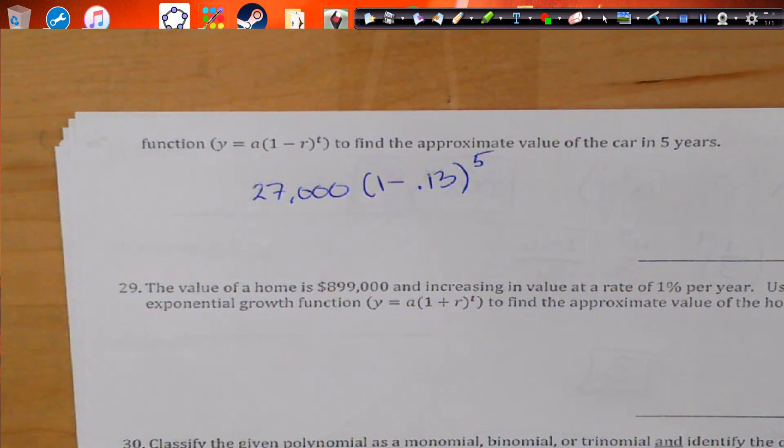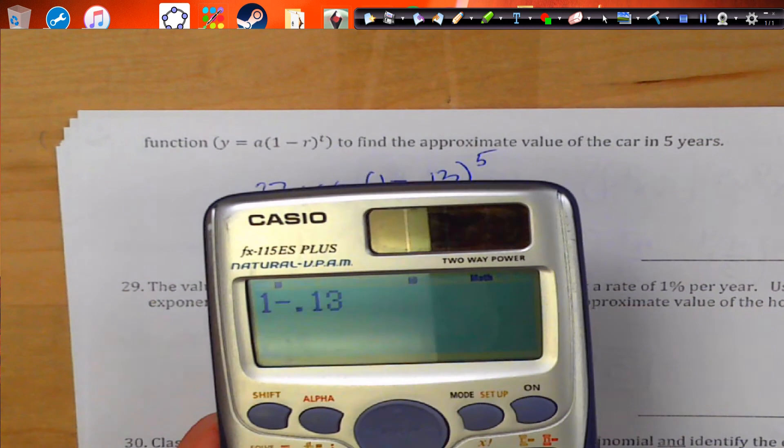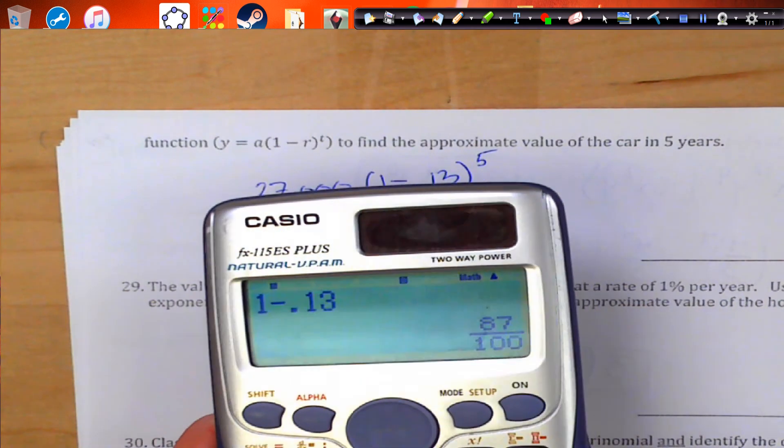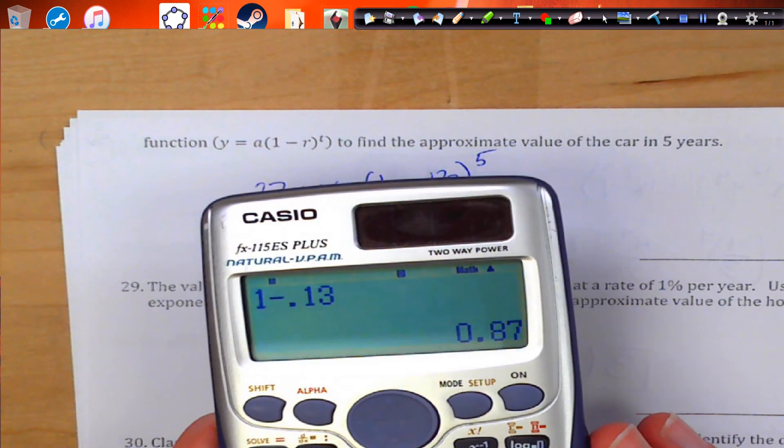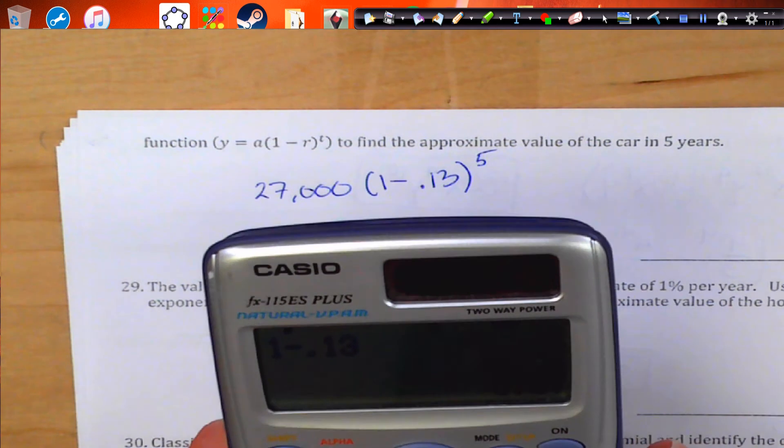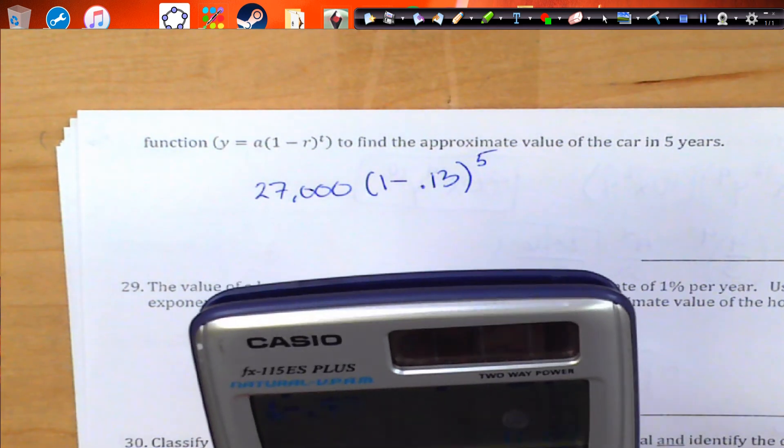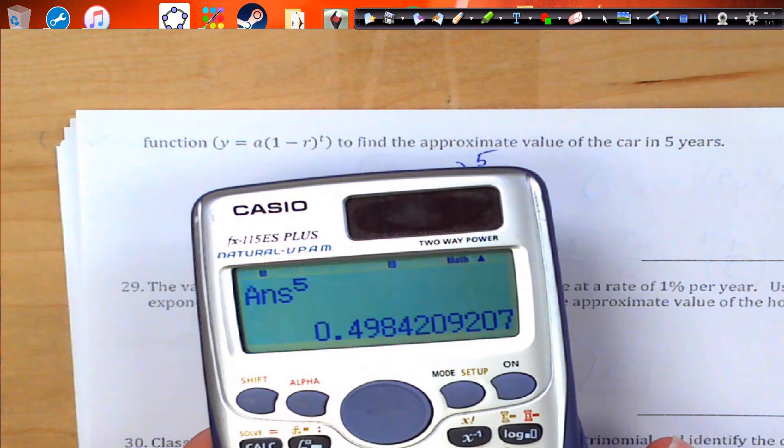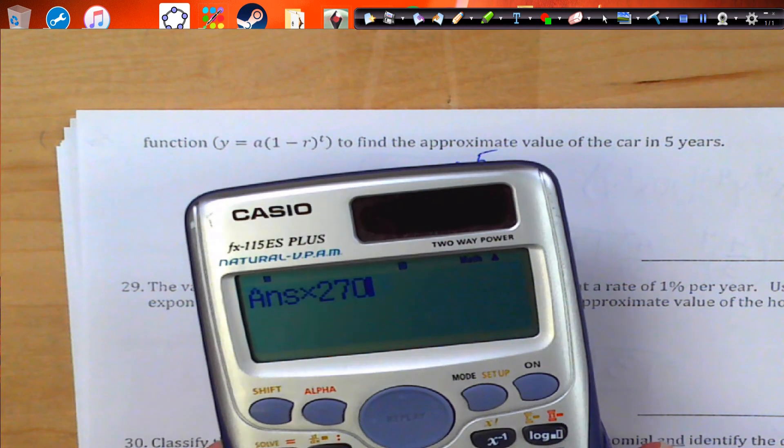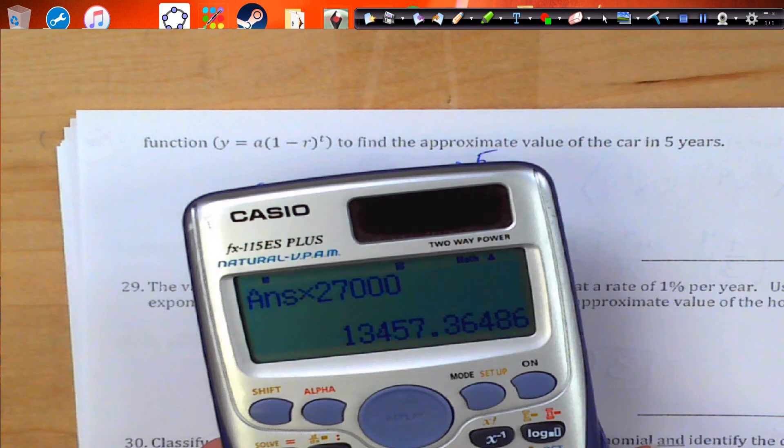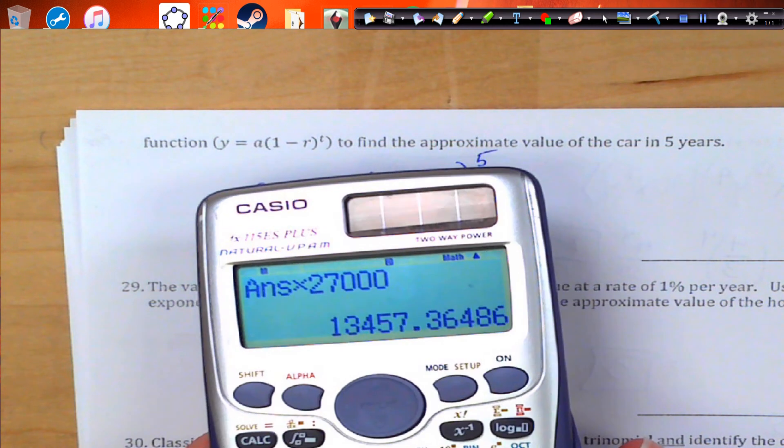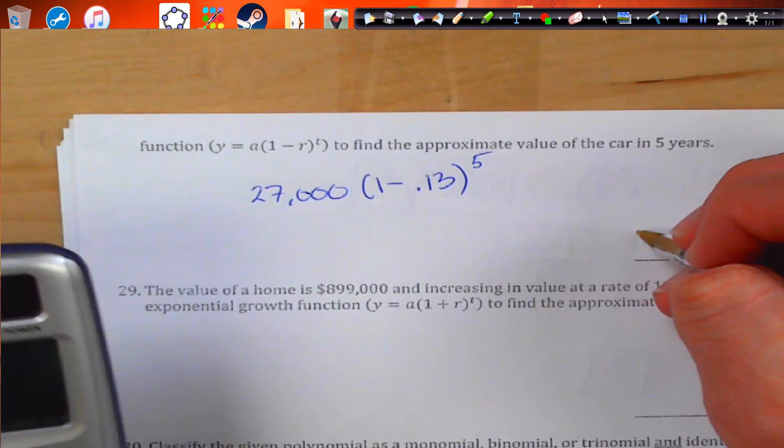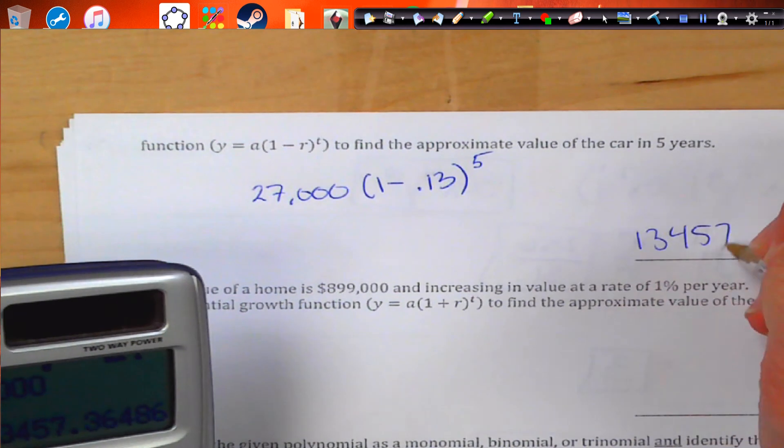So basically, we just want to put this in our calculator. 1 minus 0.13. We'll start with that. And we get 0.87. Then we're going to raise that to the fifth power. And we're going to get this number. And then we're going to times it by the price of our car. So our car is going to be worth $13,457.36.